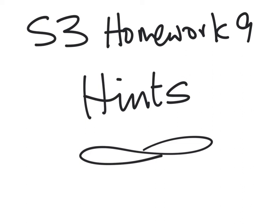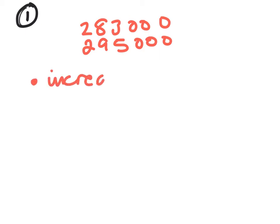Okay, here's some quick hints for homework sheet 9. The first question: you have a value of a property which increased from £283,000 up to £295,000, and you have to write the increase as a percentage. First thing you need to work out is what actually is the increase, so do the takeaway sum: 295,000 take away 283,000.